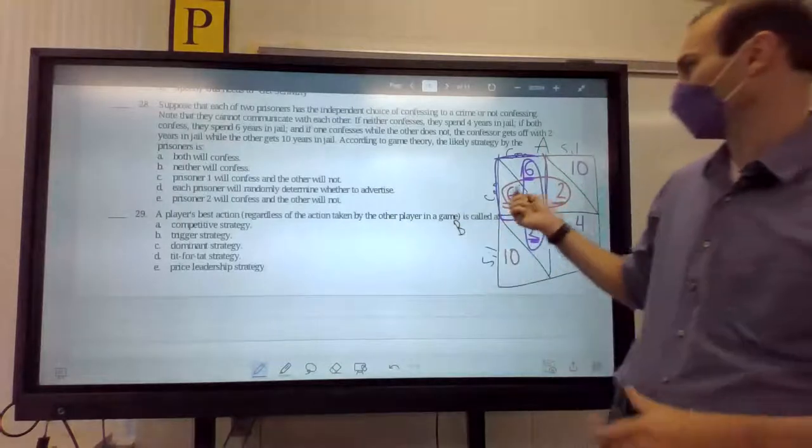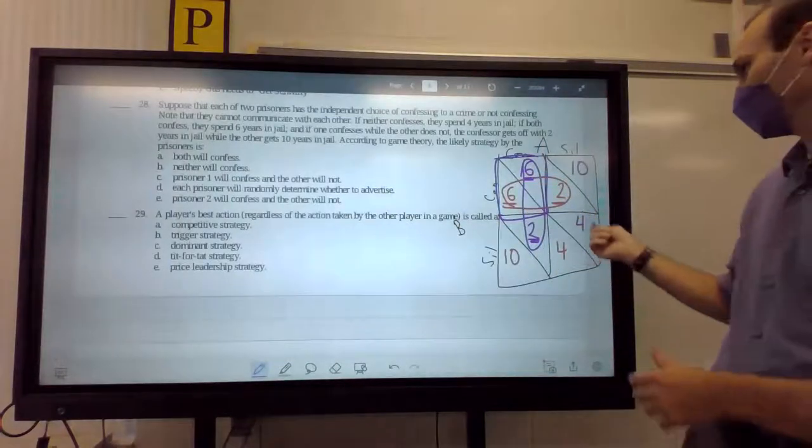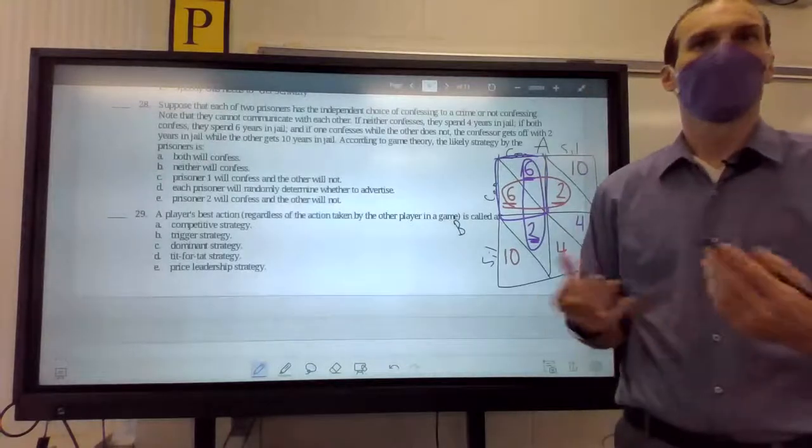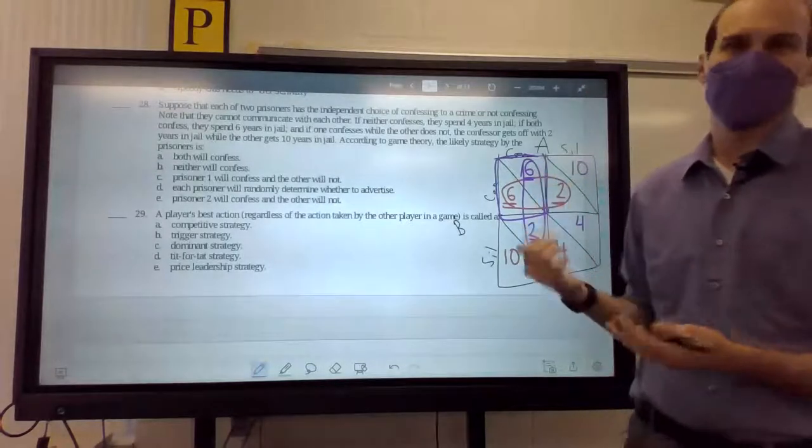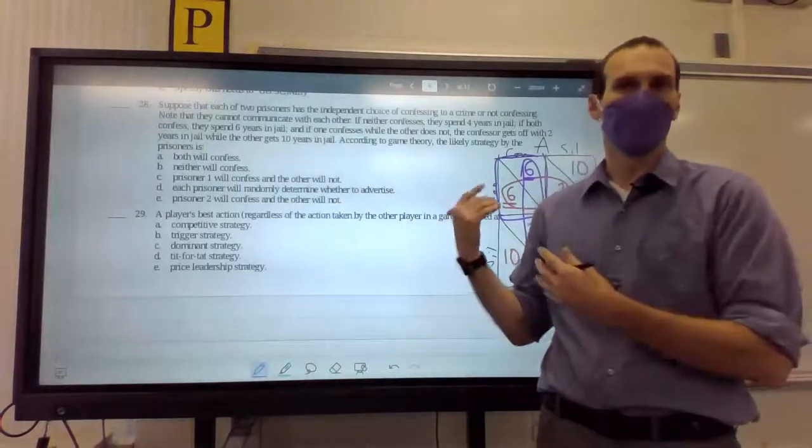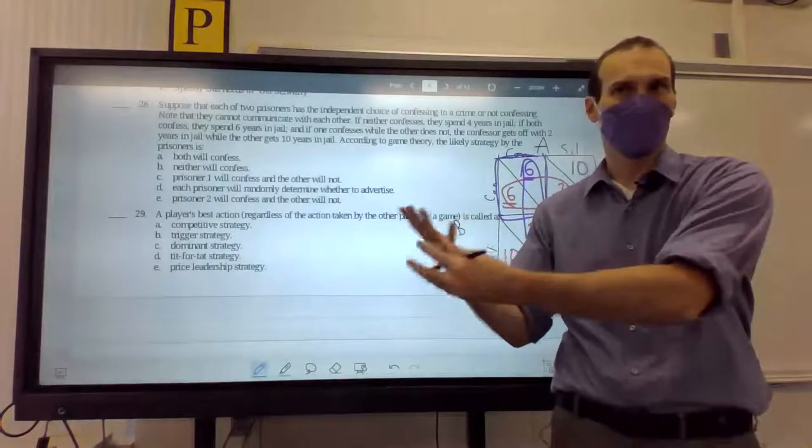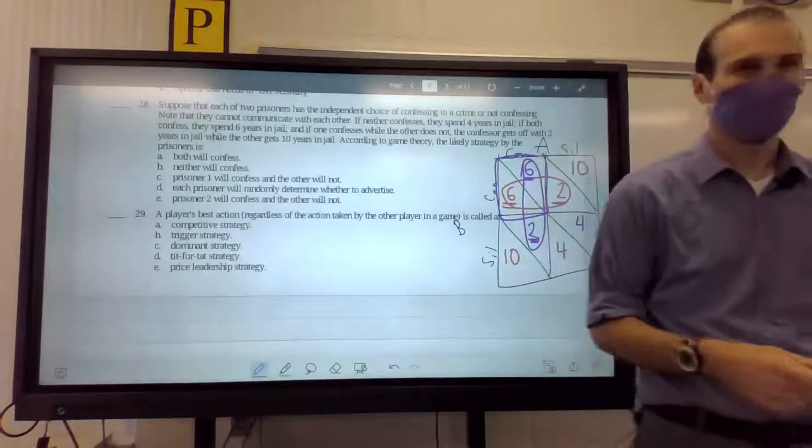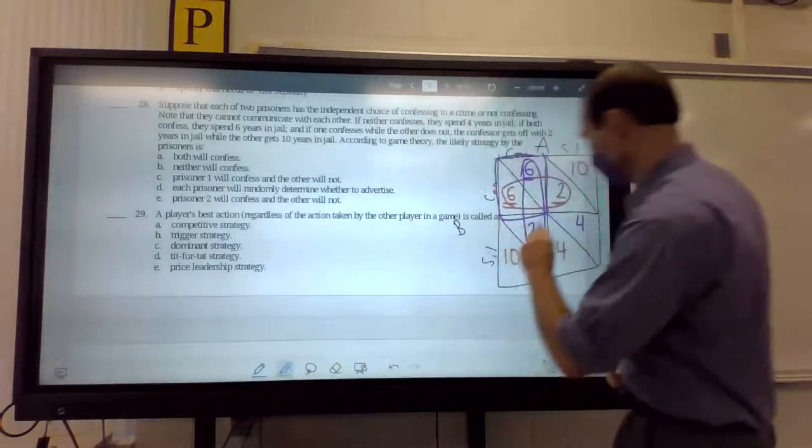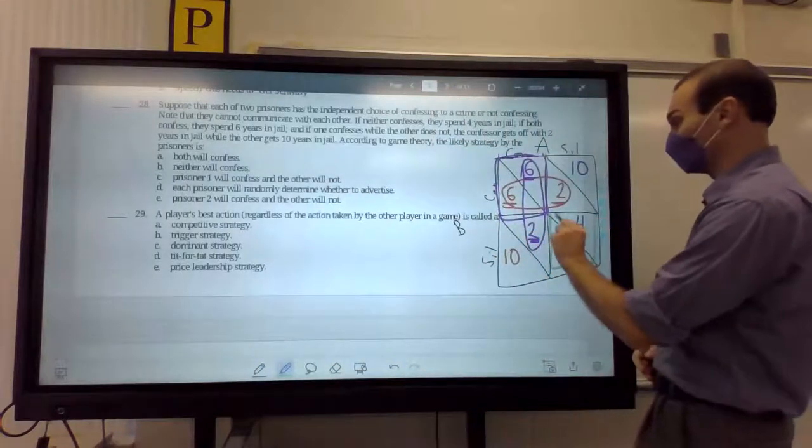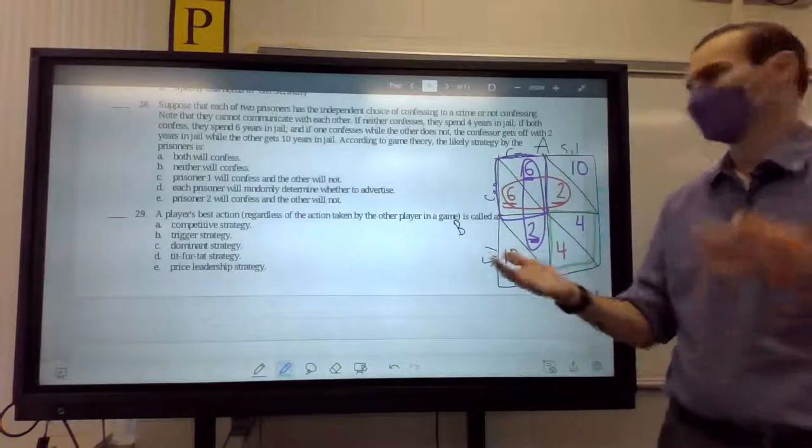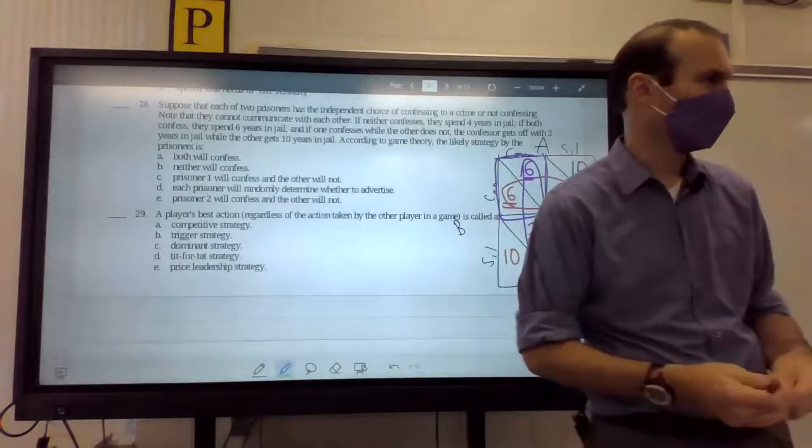But it also means you don't end up in the optimal solution down here. So, prisoner's dilemma is pretty standard. It's a cost payment. Low numbers are good. Most of them are profit. Profit is good. Big numbers are good. If they talk to each other, would they end up in the four? Yeah, yeah. If they talk, they would want to say, hey, let's both remain silent. But we would know they colluded. I don't know if that's illegal.